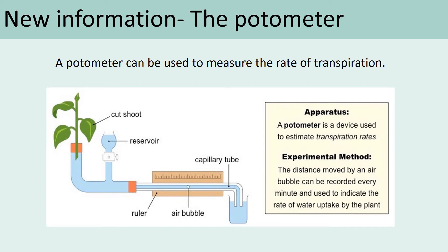You set up the equipment and record where the air bubble is, then place it into a certain condition — such as high temperature, high humidity, changing the light intensity, or varying wind flow. For a set amount of time, you let transpiration happen, then record where the air bubble ends up. You use final distance minus initial distance to find how far the bubble has moved. The bigger the distance the bubble moves, the more transpiration has occurred. Pause the video if needed to annotate what the pieces of equipment do and how it works.